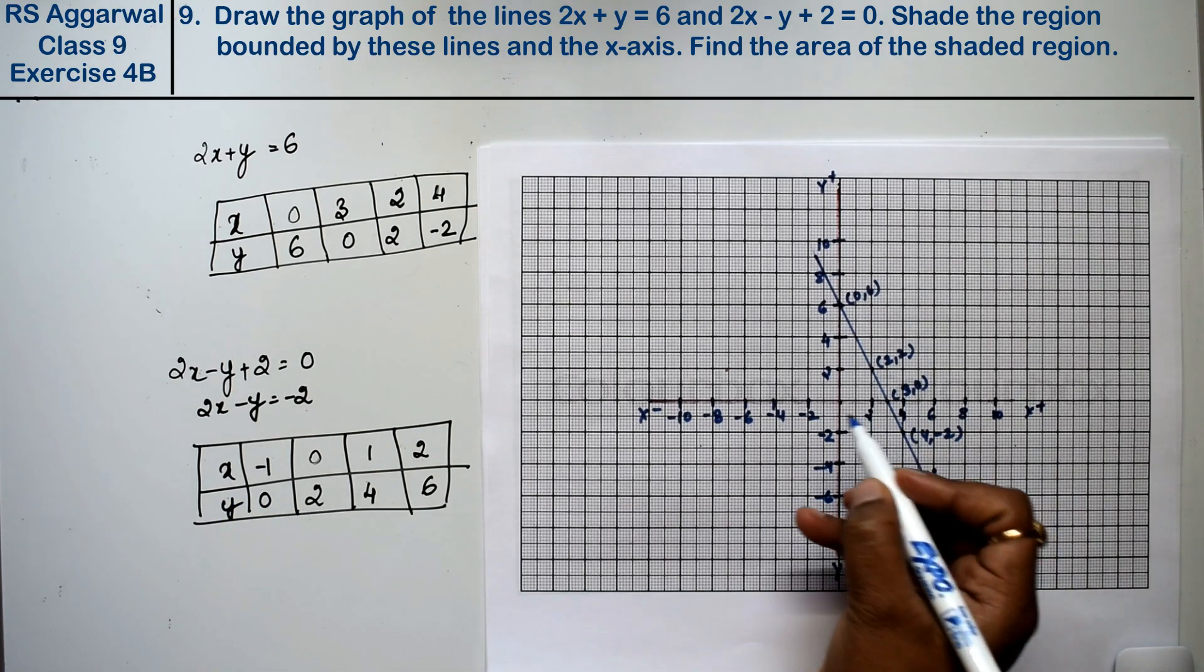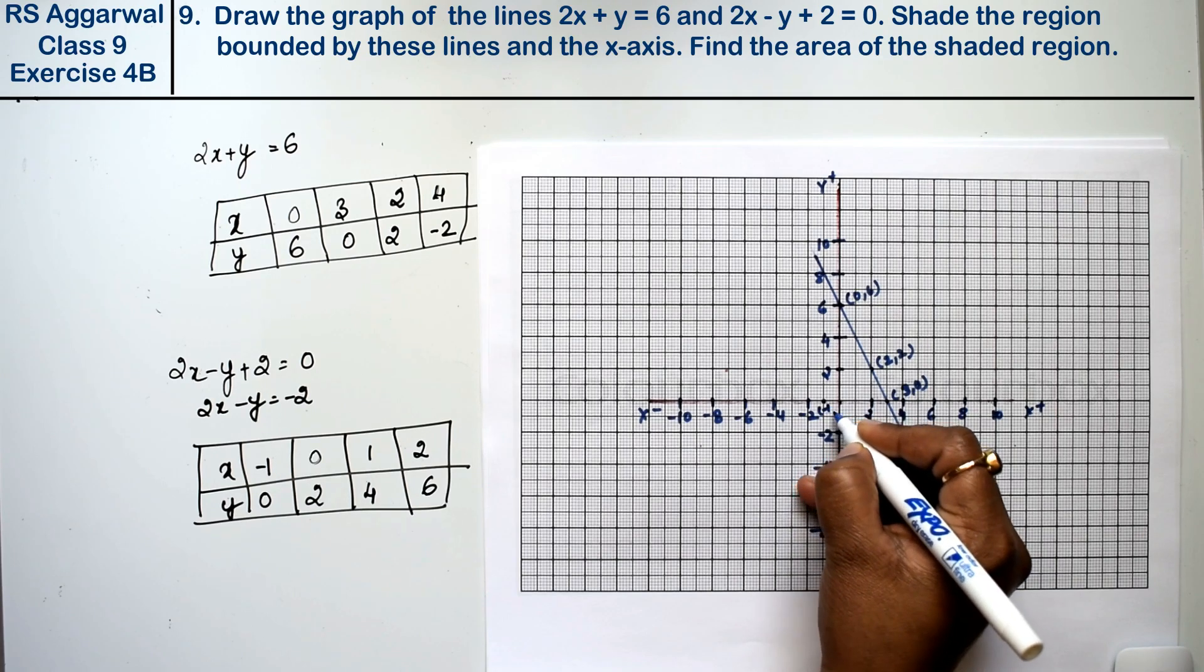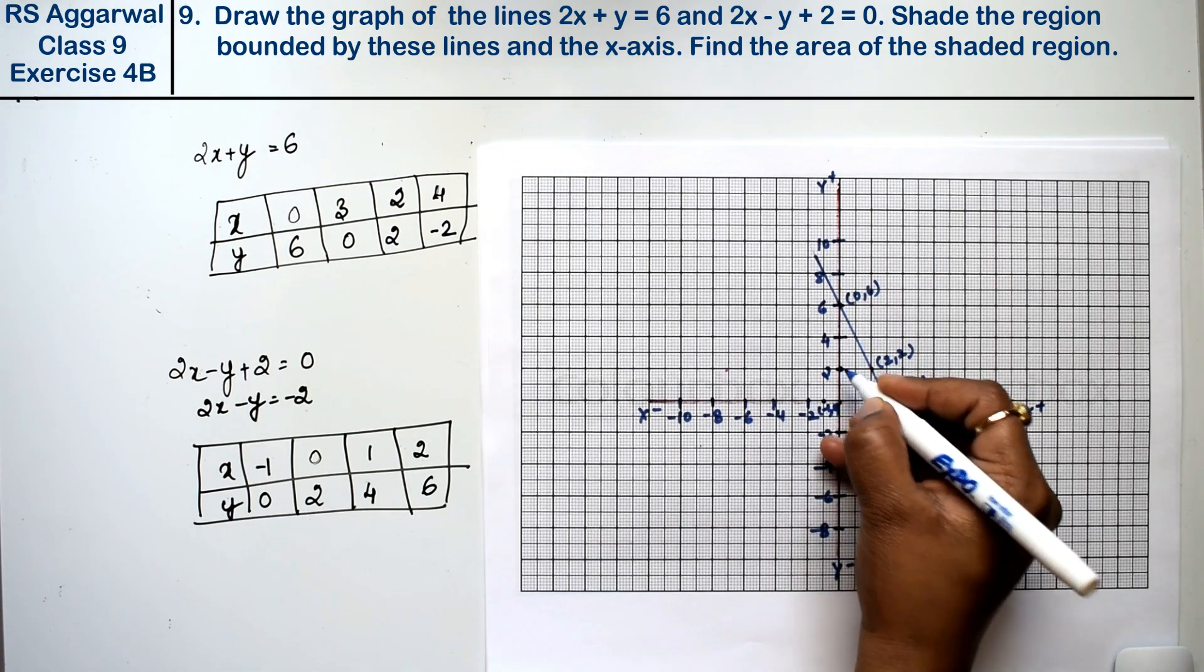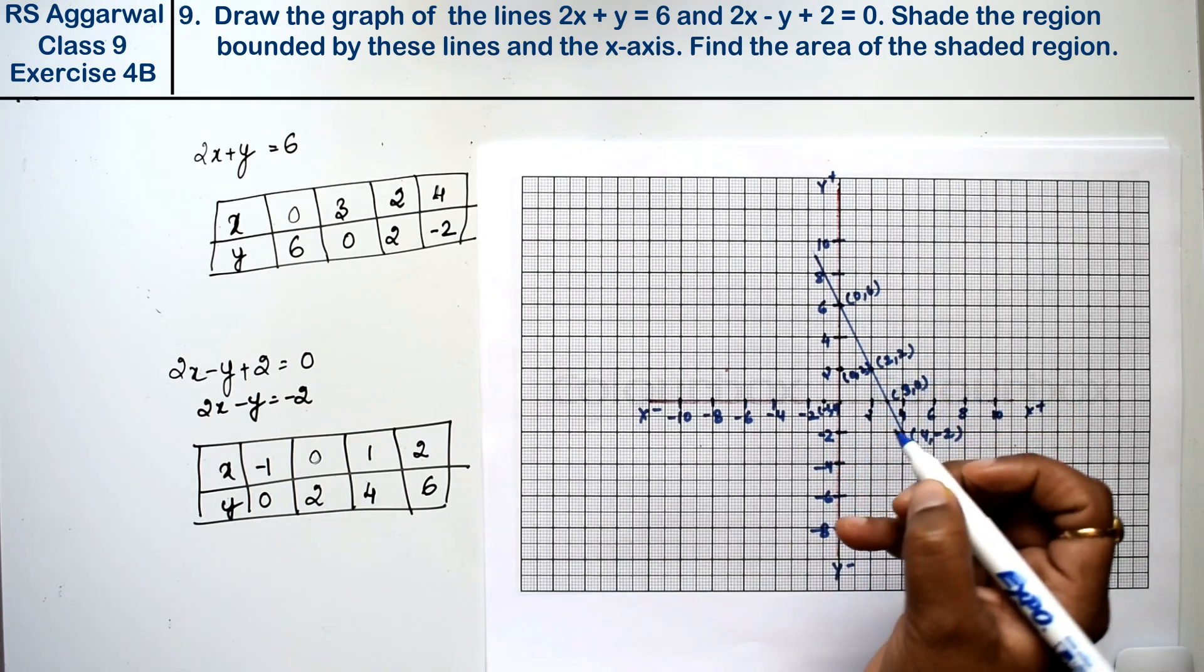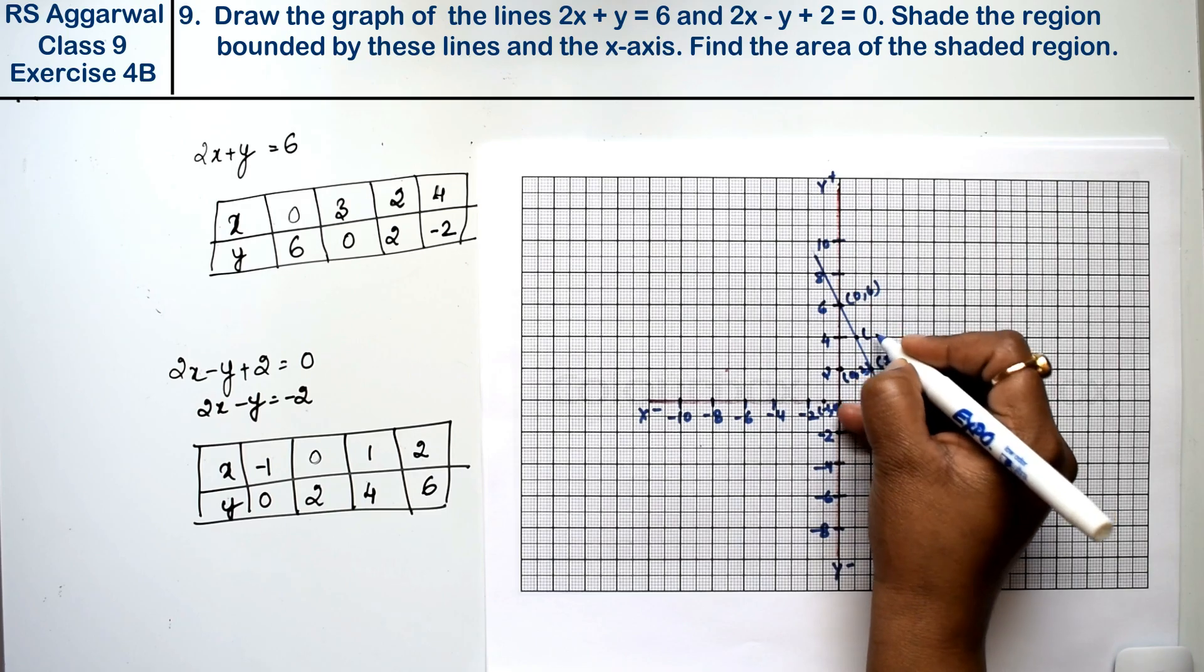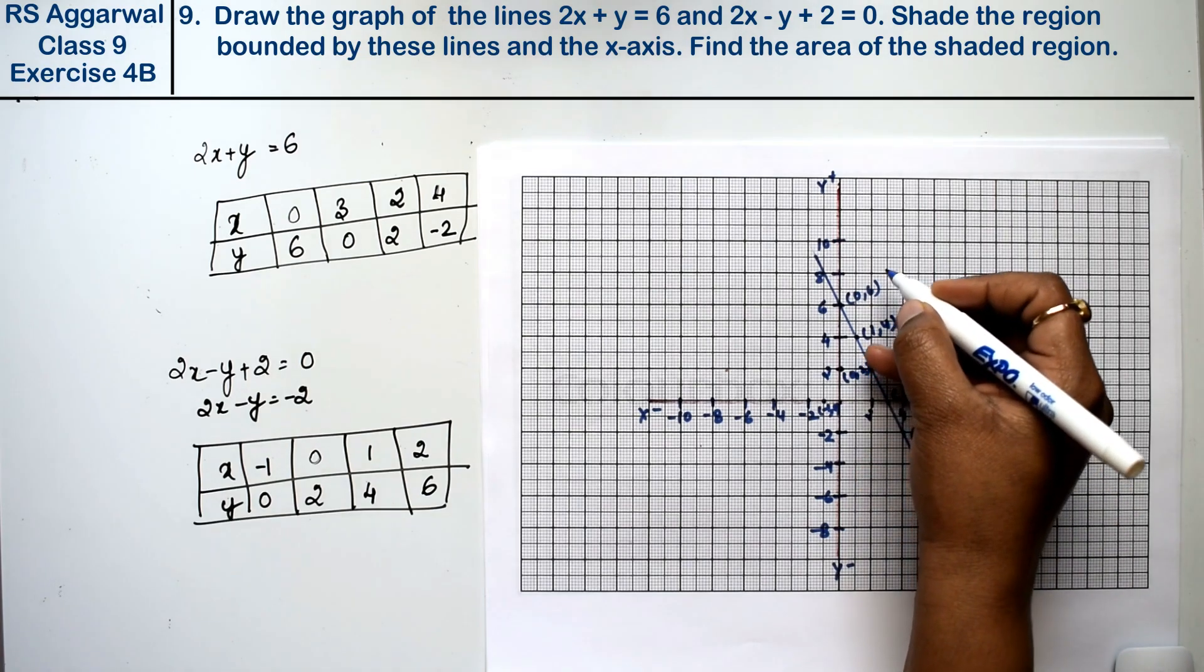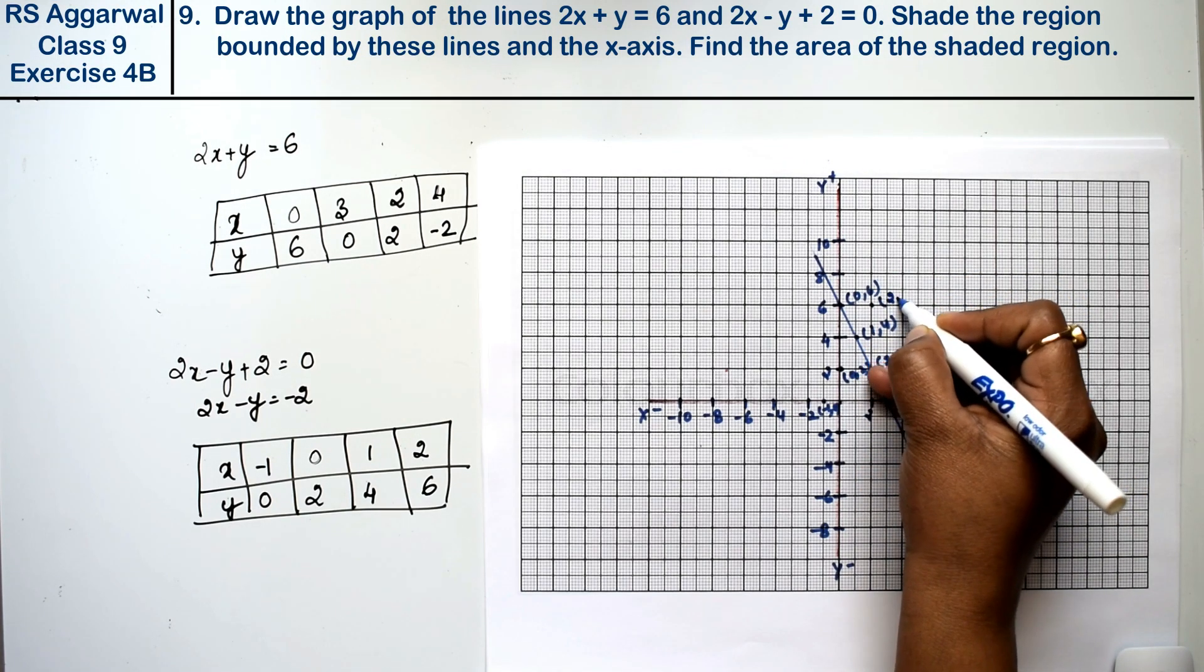x is minus 1, then y is 0, that means this one. Next, x is 0 then y is 2. This one: x is 0 and y is 2. Next, x is 1 and y is 4. 1 and 4. x is 2 and y is 6. 2 and 6.